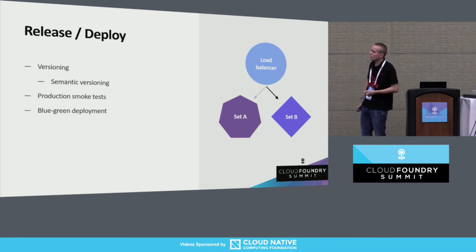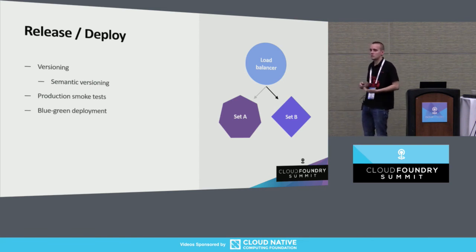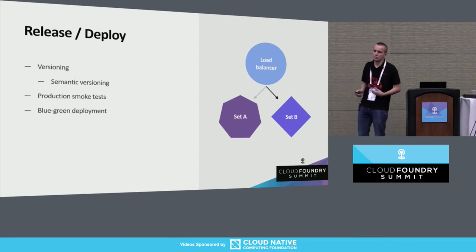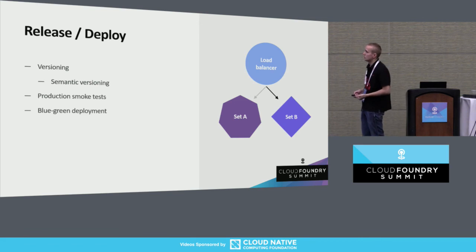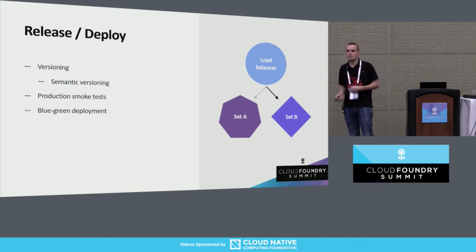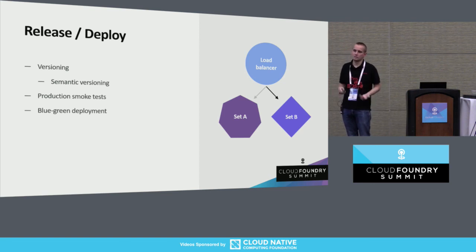With those workarounds, we separated the application source code from configuration and moved to the release phase. Only a few small steps were needed: first, correct versioning — in Concourse you can use default version bumps, and you need a PowerShell script to update the assembly information. We used semantic versioning. We also needed to produce smoke tests that could even run on production. Finally, we created scripts for blue-green deployment that change environment variables and routing to the correct server depending on whether the previous version is working or not.